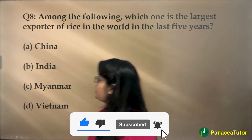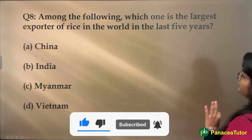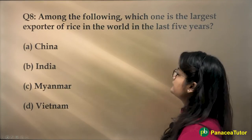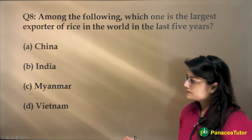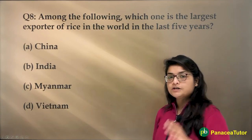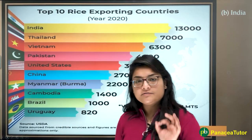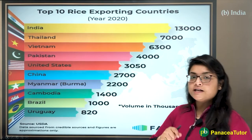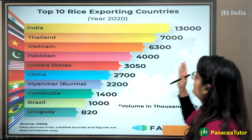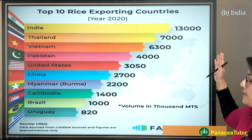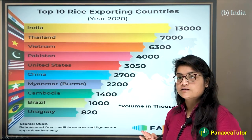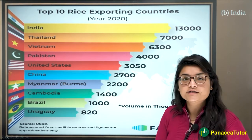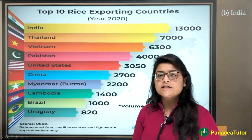The next question asks which country is the largest exporter of rice in the world in the last five years. The answer is definitely India — in 2020 alone, India exported 13,000 million tons of rice, which is greater than all other countries in the list, making India a leading producer and exporter.